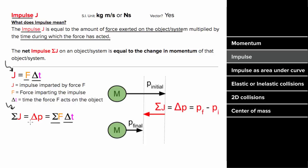The net impulse is also going to be equal to the change in momentum of that system or object. In other words, if a mass had some initial momentum and ends with some final momentum, the change in momentum — p final minus p initial — is going to equal the net impulse, which equals the net force on that object multiplied by the time during which that force was acting.